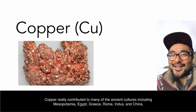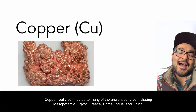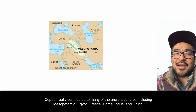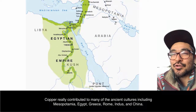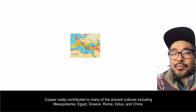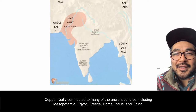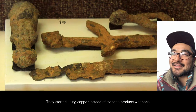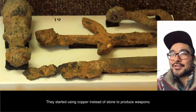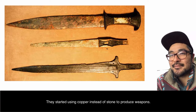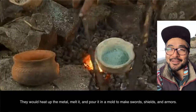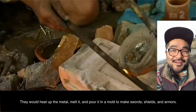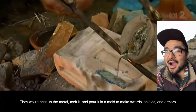Copper really contributed to many of the ancient cultures, including Mesopotamia, Egypt, Greece, Rome, Indus, and China. They started using copper instead of stone to produce weapons. They would heat up the metal, melt it, and pour it into a mold to make swords, shields, and armors.